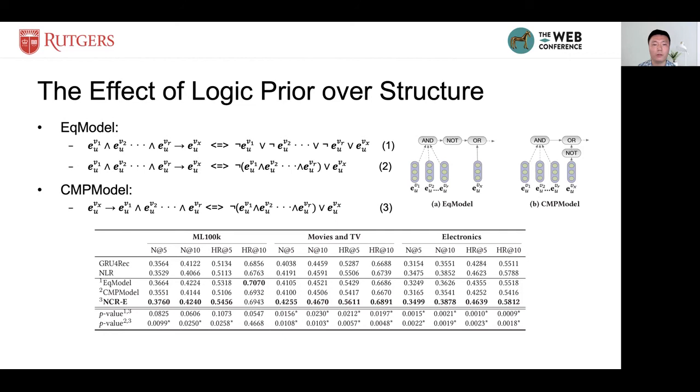Another model is logically non-equivalent model, noted as a comparative model. Figure B shows the structure of the model. You can see that the model attempts to use the future event to predict the previous event, which violates our logical intuition about the recommendation task.